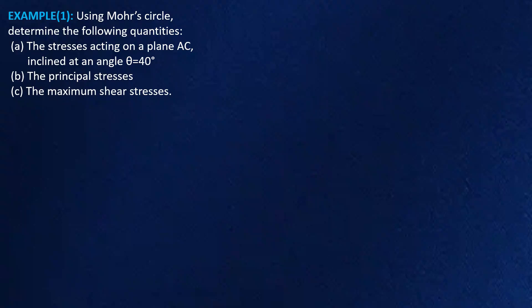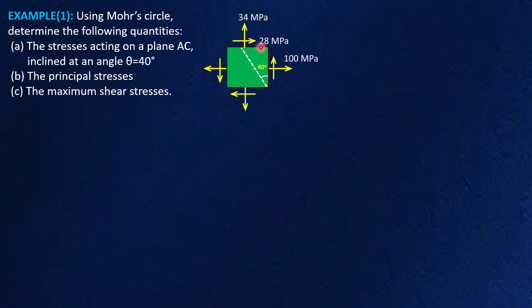Friends, we would like to solve a problem based on Mohr's circle. We have a situation in which an element is subjected to various forces as shown in the figure. Let me call this point as point A, this point as point B, and this point as point C.